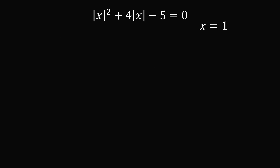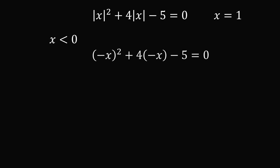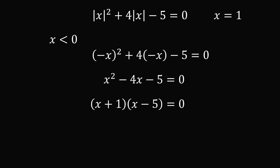We'll move this solution to the side and consider the other case that x is less than 0. In that case, the absolute value of x is equal to negative x, so we can substitute in. We get the square of negative x plus 4 multiplied by negative x minus 5 is equal to 0. We simplify to get the quadratic equation x squared minus 4x minus 5 is equal to 0. We solve by factoring to get x plus 1 multiplied by x minus 5 is equal to 0, giving x is equal to negative 1 and x is equal to 5. But since we assumed x was less than 0, we eliminate the extraneous solution x is equal to 5.